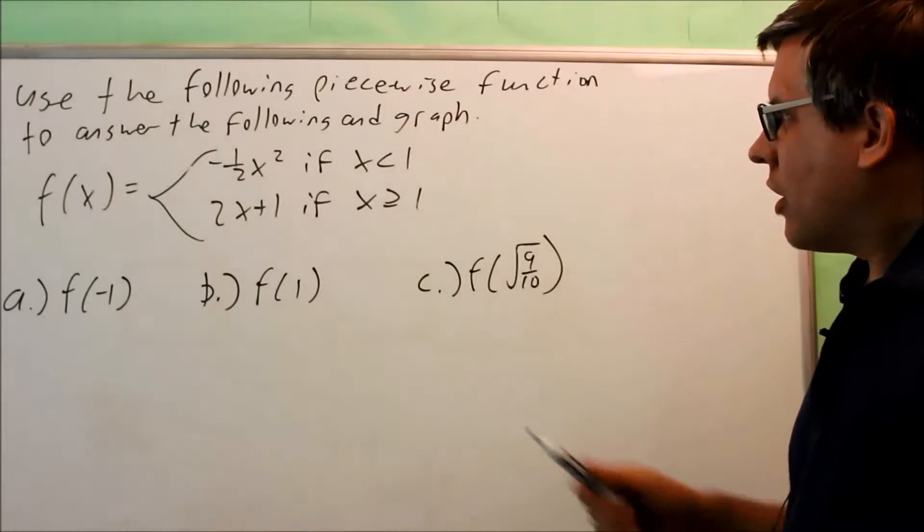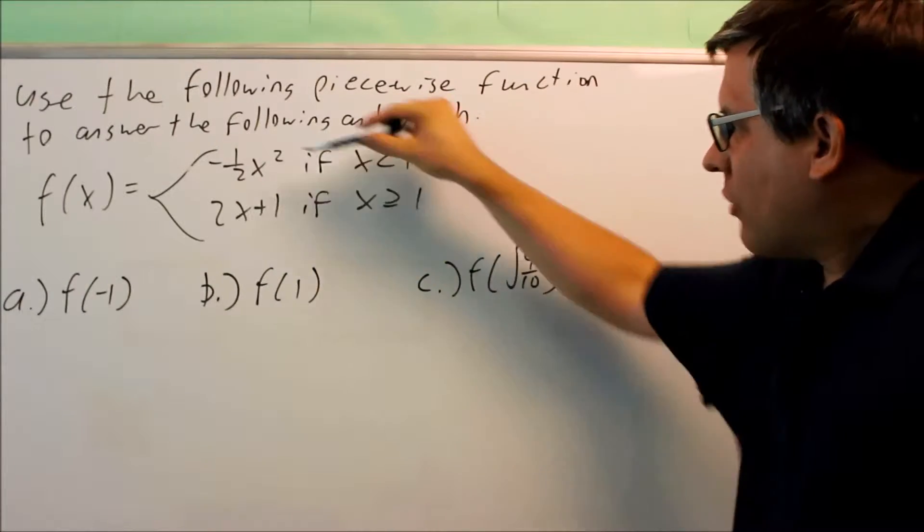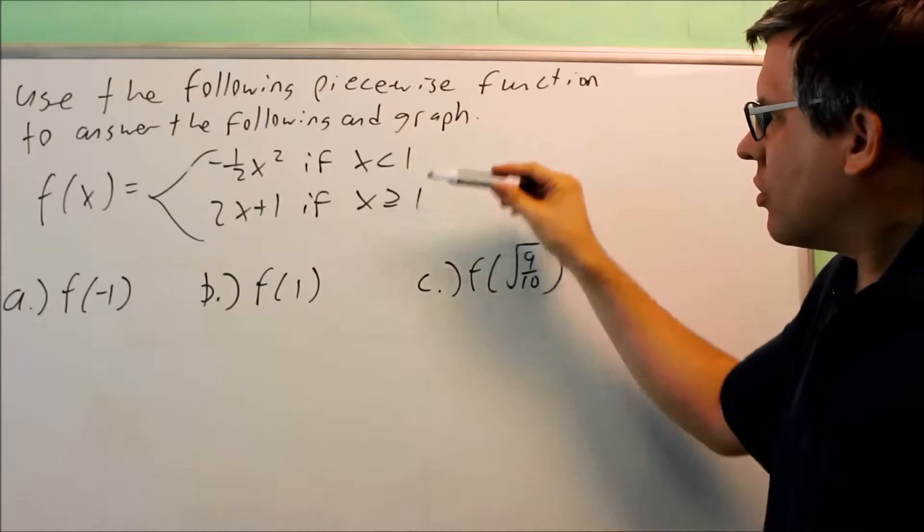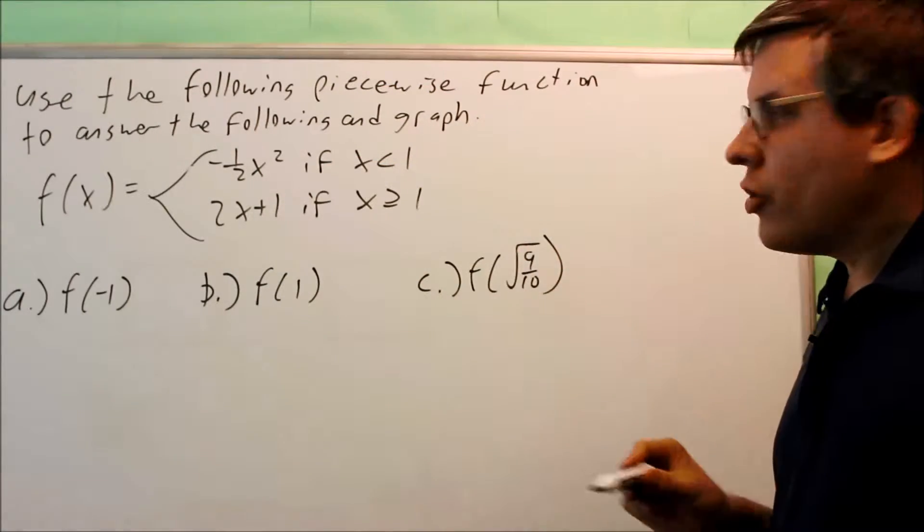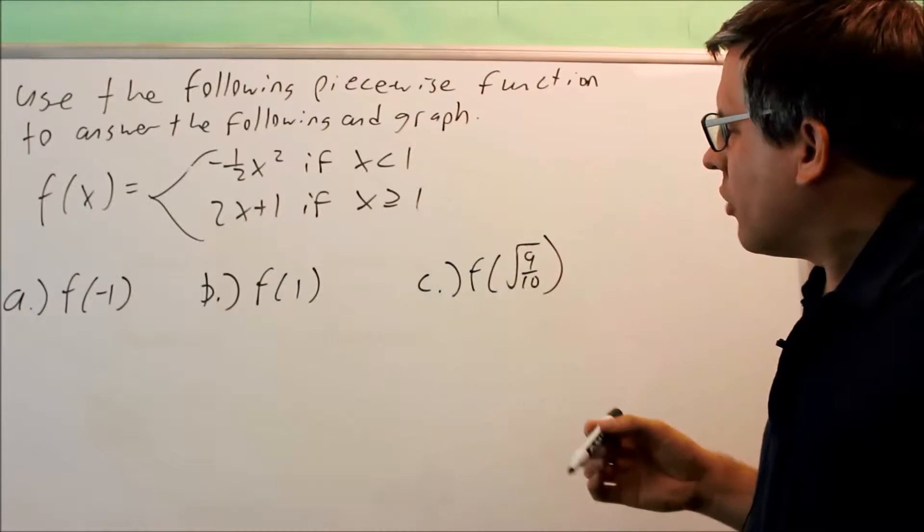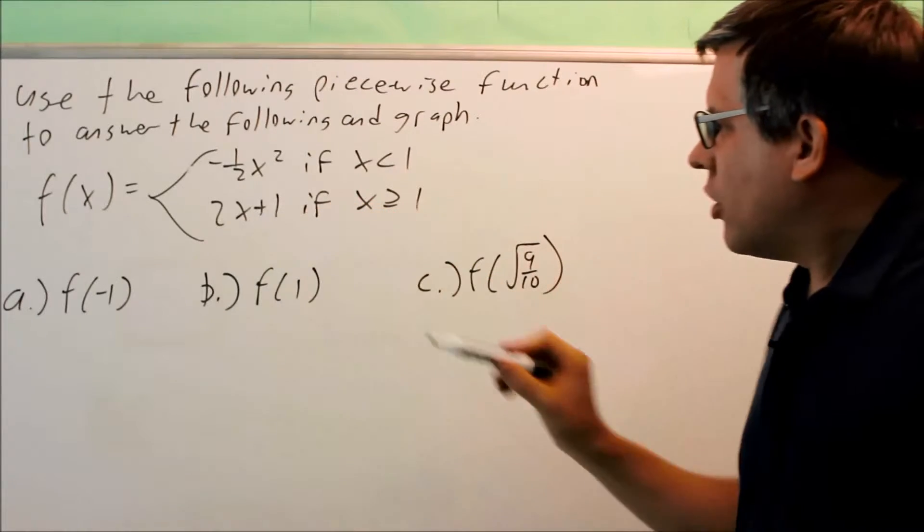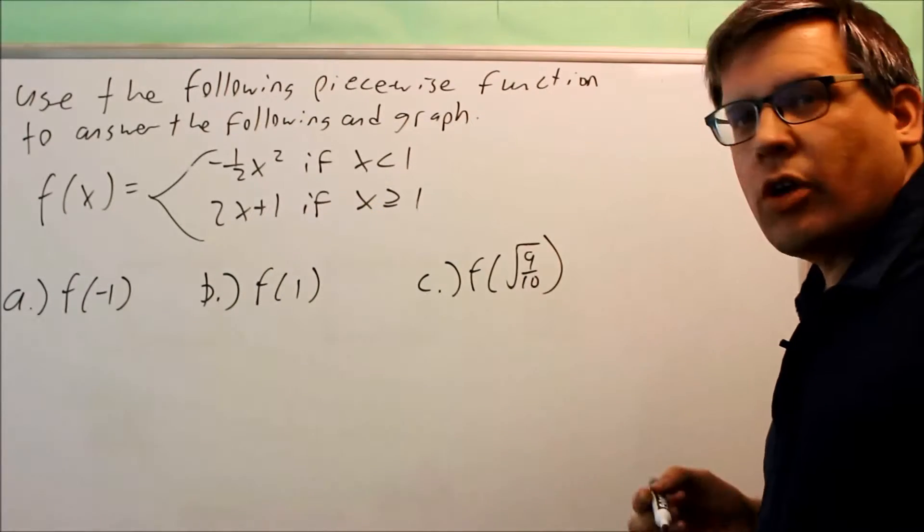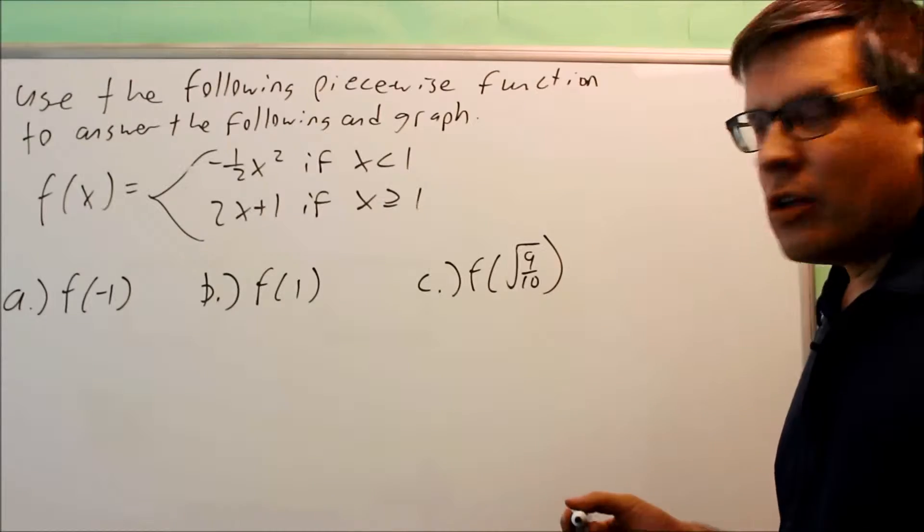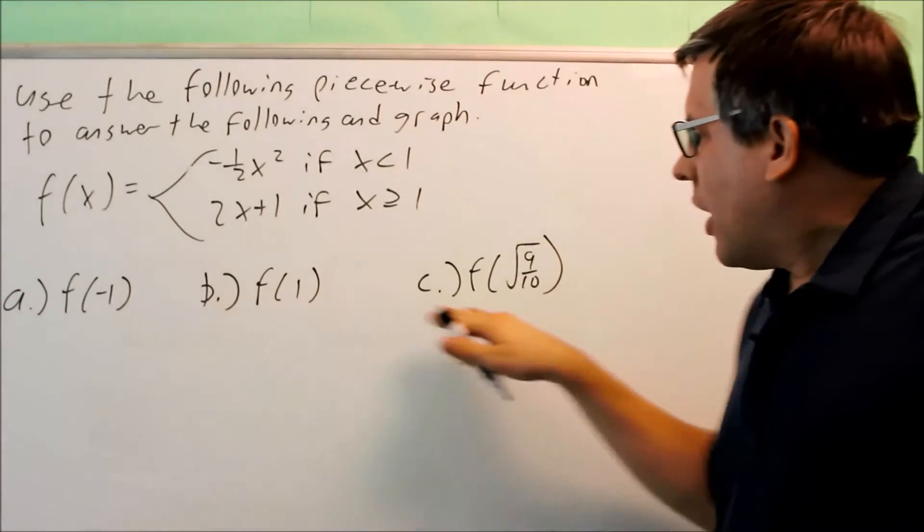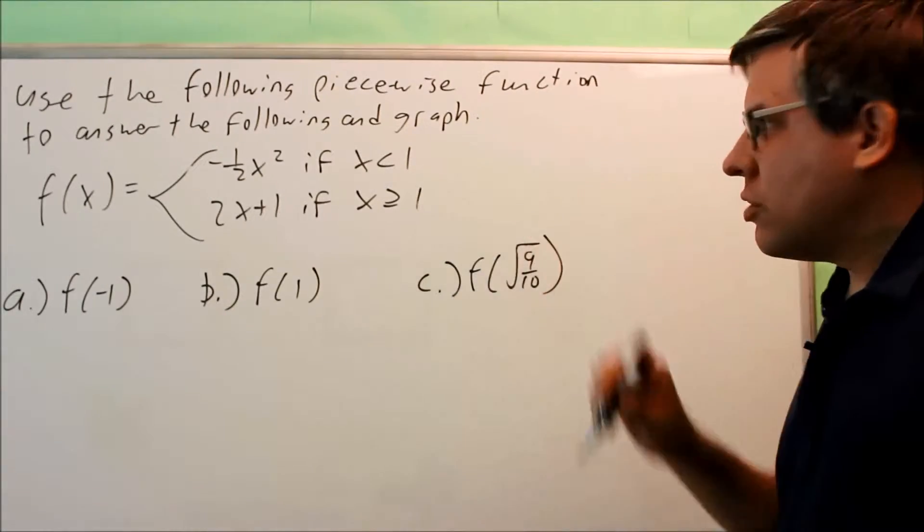We have another piecewise function to take a look at. This time we have a square. Here's our conditions. The first formula is only used when x values are less than 1, and the second one is a linear one that's used only when x is greater than or equal to 1. We want to first answer these three parts, and then we're going to graph it.